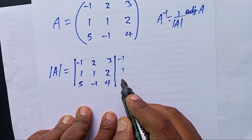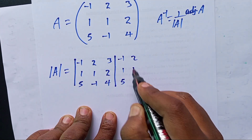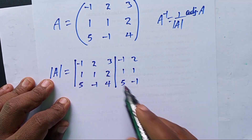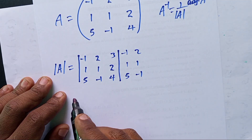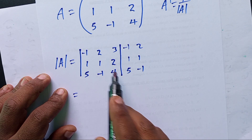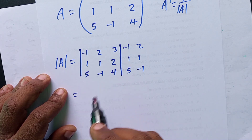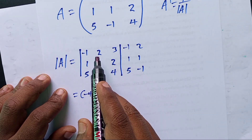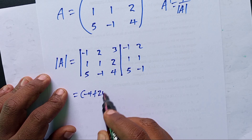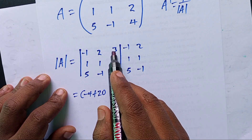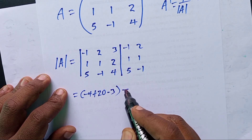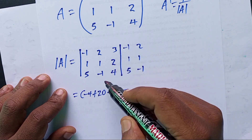Our matrix has entries: minus 1, 1, 5; 2, 1, minus 1. We compute the determinant using the main diagonal. Along the main diagonal: negative 1 times 1 times 4 gives negative 4. Then plus 2 times 2 times 5: 2 times 2 is 4, times 5 is 20. Then 3 times 1 times minus 1 is negative 3.